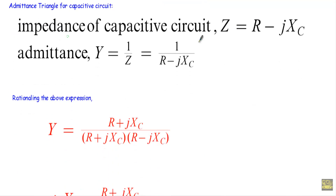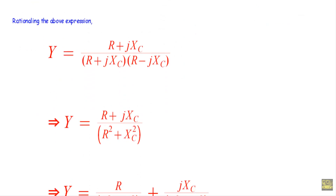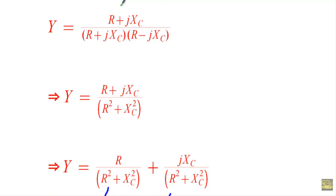Now let me show the admittance triangle of a capacitive circuit. In an RC series circuit, the impedance is Z = R − jXC. To find admittance, we take the reciprocal: Y = 1/Z = 1/(R − jXC). To rationalize, we multiply numerator and denominator by the conjugate (R + jXC), giving Y = (R + jXC) / [(R + jXC)(R − jXC)].